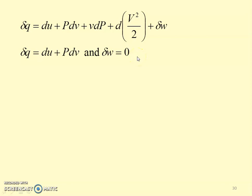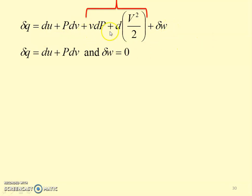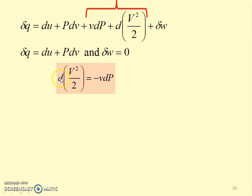There is no work done as the steam flows through the nozzle. So the terms dQ equals dU plus PdV cancel out, and dW equals 0. What remains is VdP plus d(V squared by 2) equals 0. Rearranging: d(V squared by 2) equals minus V times dP, where V is the specific volume and dP is the change in pressure.